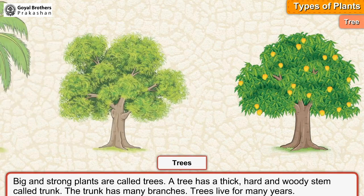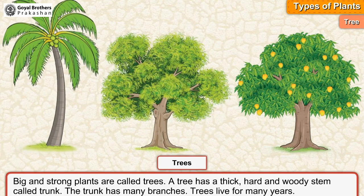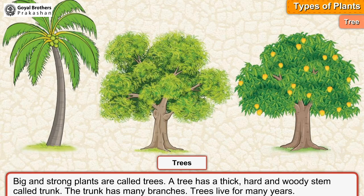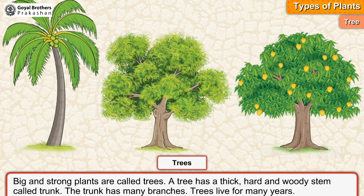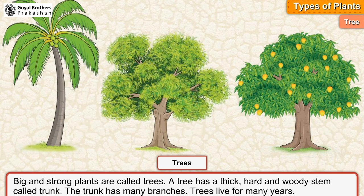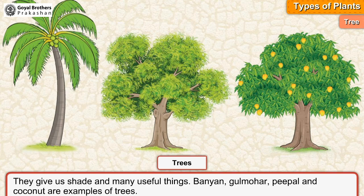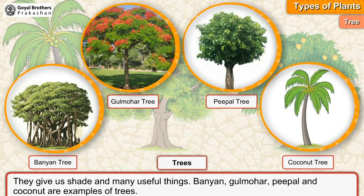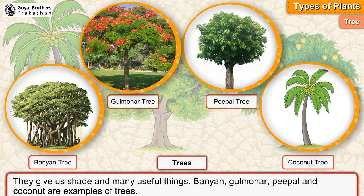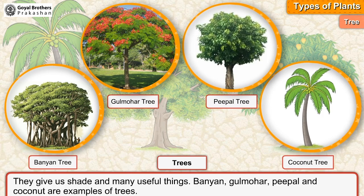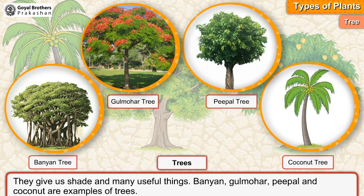Big and strong plants are called trees. A tree has a thick, hard, and woody stem called a trunk. The trunk has many branches. Trees live for many years and give us shade and many useful things. Banyan, gulmohar, peepal, and coconut are examples of trees.